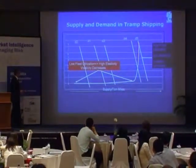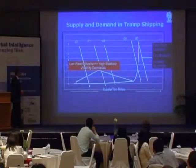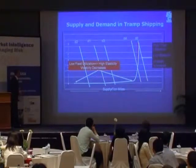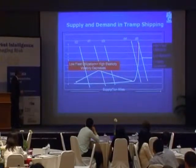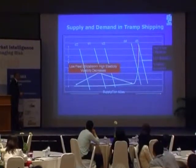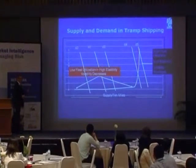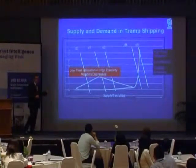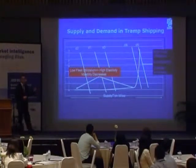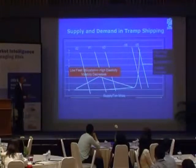In the inelastic region, even a small shift in demand to the right is going to inflict a huge change in price. In October 2003, the rates essentially tripled in the space of two to three months.